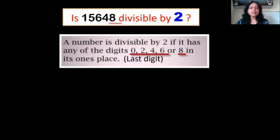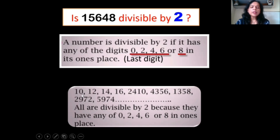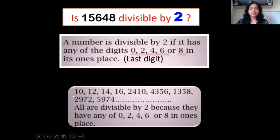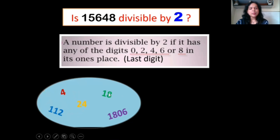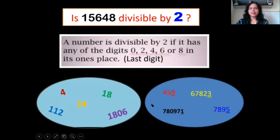Let us see some more examples. Just look at the unit place: 0, 2, 4, 6, then 0, 6, 8, 2, 4 — all these numbers have one of the digits from the divisibility rule. So all these numbers are divisible by 2. Now look at the unit place of these: 4, 8, 4, 2, 6 — yes, all divisible by 2. But look at this example — the last digits are 9, 3, 1, 5. That means these numbers are not divisible by 2.